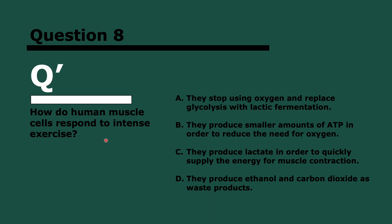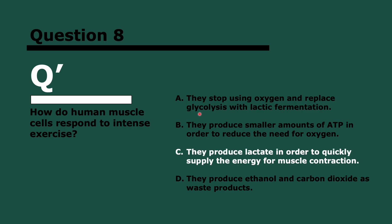Question eight. How do human muscle cells respond to intense exercise? Three, two, and one. A doesn't make sense, why would they stop using oxygen? Actually, you need more oxygen when you're doing intense exercise. They don't produce smaller amounts of ATP to reduce the need for oxygen, that's the opposite. They produce larger amounts of ATP and therefore require more oxygen. C is true, so they produce lactate, they do anaerobic respiration. D is false because D are the waste products of anaerobic respiration but in bacteria, not in humans. In humans, it's lactate.